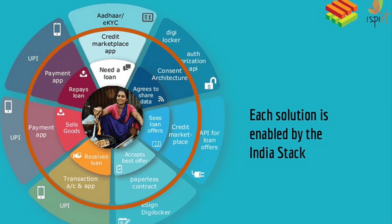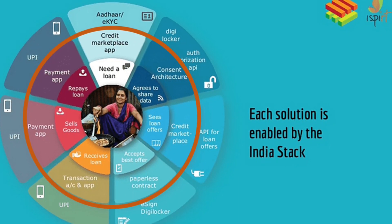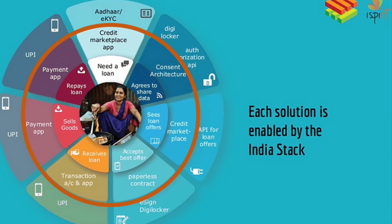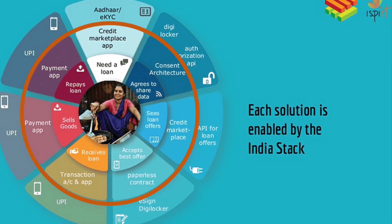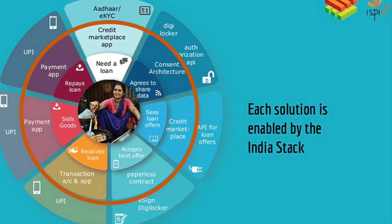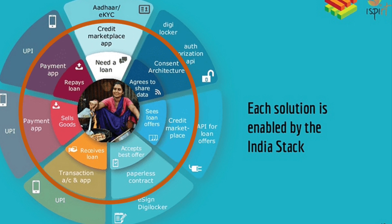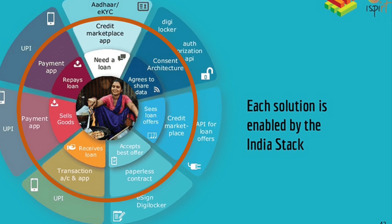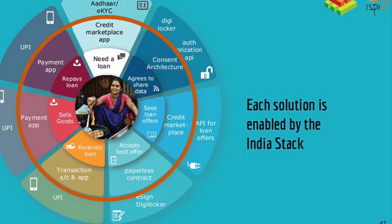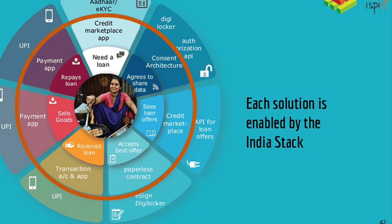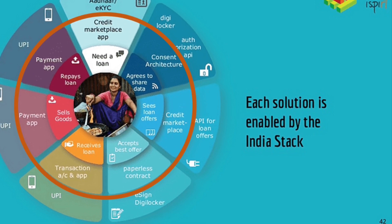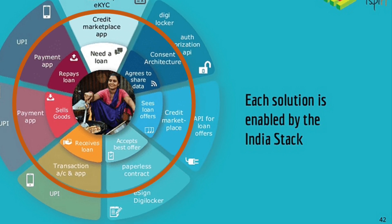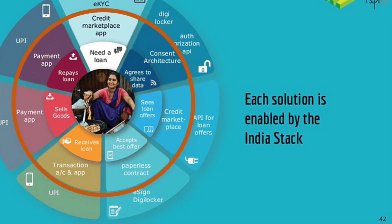The middle ring is about the architecture needed at the fintech application side, which enables the marketplace. There is a credit marketplace application, and the consent mechanism has to be in place — we discussed the consent mechanism in one of the videos on account aggregator, so please have a look at that video as well. The point I'm driving here is that the middle layer is all about fintech enablement of the marketplace.